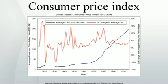Two basic types of data are needed to construct the CPI: price data and weighting data. The price data are collected for a sample of goods and services from a sample of sales outlets and a sample of locations for a sample of times. The weighting data are estimates of the shares of the different types of expenditure in the total expenditure covered by the index. These weights are usually based upon expenditure data obtained from expenditure surveys for a sample of households or upon estimates of the composition of consumption expenditure in the national income and product accounts.